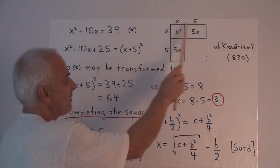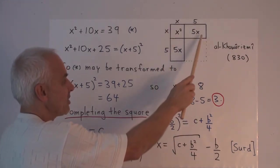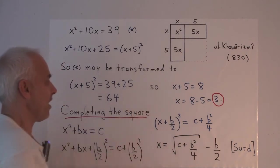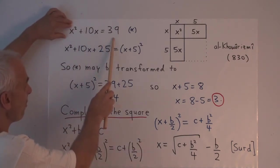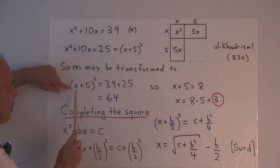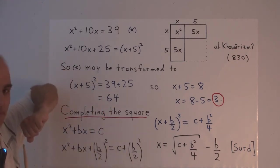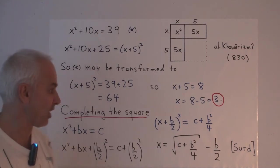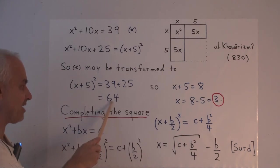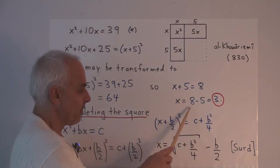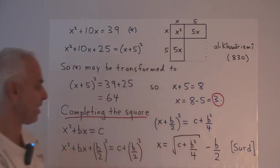And so, x plus 5 squared, the entire area here, is 39 plus 25, which we work out is 64. Now the equation has been transformed from an equation like this to the equation x plus 5 squared equals 64. This is very much like the simpler kind of equation that we've already been talking about. And its solution is x plus 5 equals 8, because 8 times 8 is 64. And from that, we can deduce that x equals 8 minus 5, which is 3.